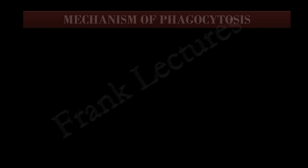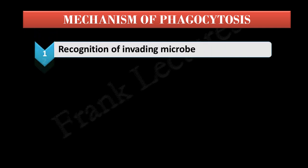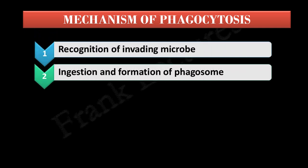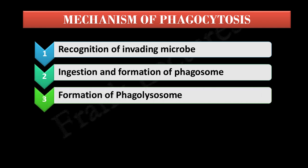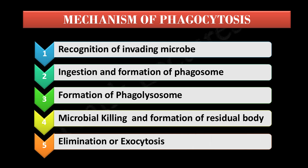Let us now study the mechanism of phagocytosis. The whole process can be studied under five steps: first, recognition of the invading microbe; second, ingestion and formation of phagosome; third, formation of phagolysosome; fourth, microbial killing and formation of residual body; and fifth, elimination or exocytosis. Let us study them in detail one by one.